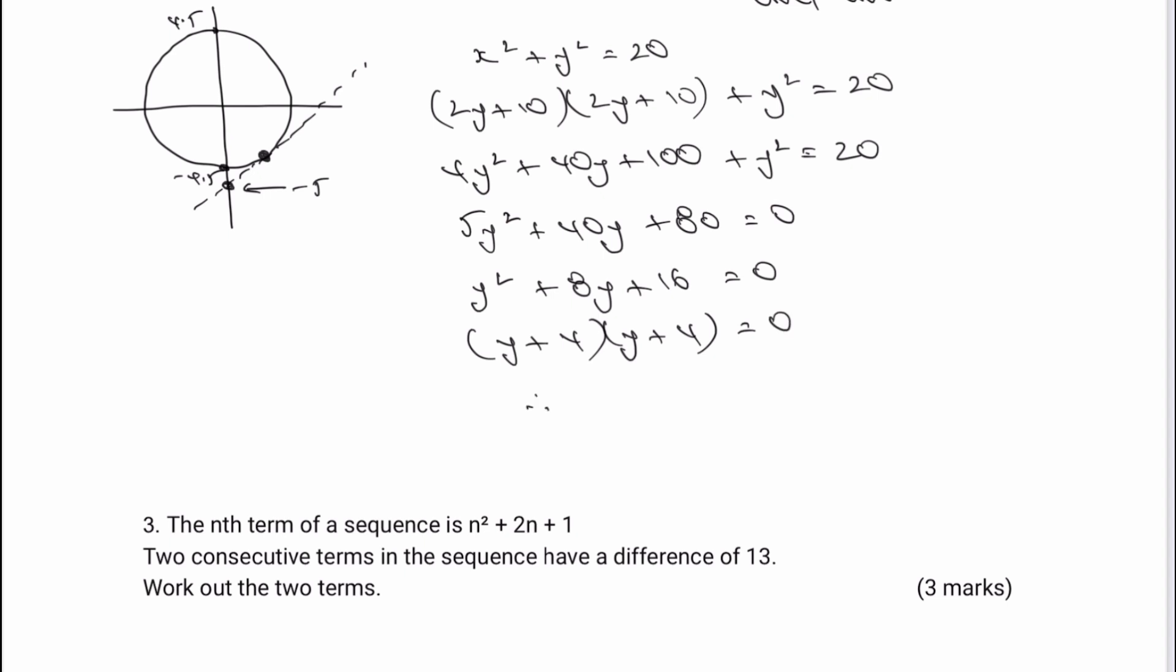So therefore, y equals negative 4. And it is one solution. And it also fits quite neatly with my sketch at the top here, where I've now got the coordinates. And the first one I've got is the value of y, which is negative 4. So what I need now is the value of x.